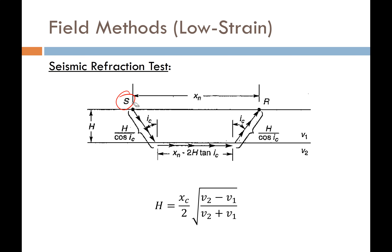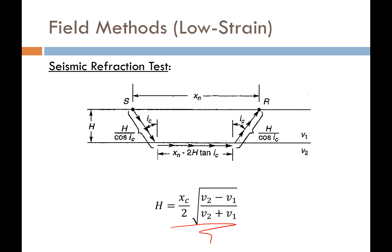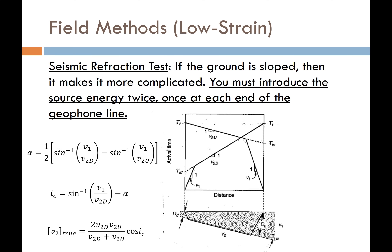Because we're interested in head waves coming up at the critical angle, we can perform the math. With our seismic source and a receiver at distance x_n, the soil has some unknown thickness h, and there's a critical angle we'll solve for. We can compute an equation for the layer thickness h, where v_2 is the propagation velocity in the lower layer and v_1 is the propagation velocity in the upper layer. If the ground is sloped, things become more complicated.